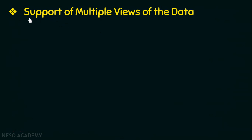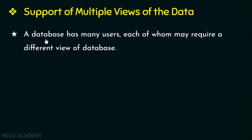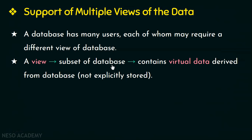The next characteristic of DBMS is support of multiple views of the data. A database has many users and each user will have different needs — they may require a different view or perspective of the database. For example, one user will only be interested in the grades received by students while another user will only be interested in the courses taken by each student. So DBMS will provide only the necessary data required for each user. A view, which is a subset of the database derived from a main database table, contains virtual data — data that is not physically or explicitly stored.